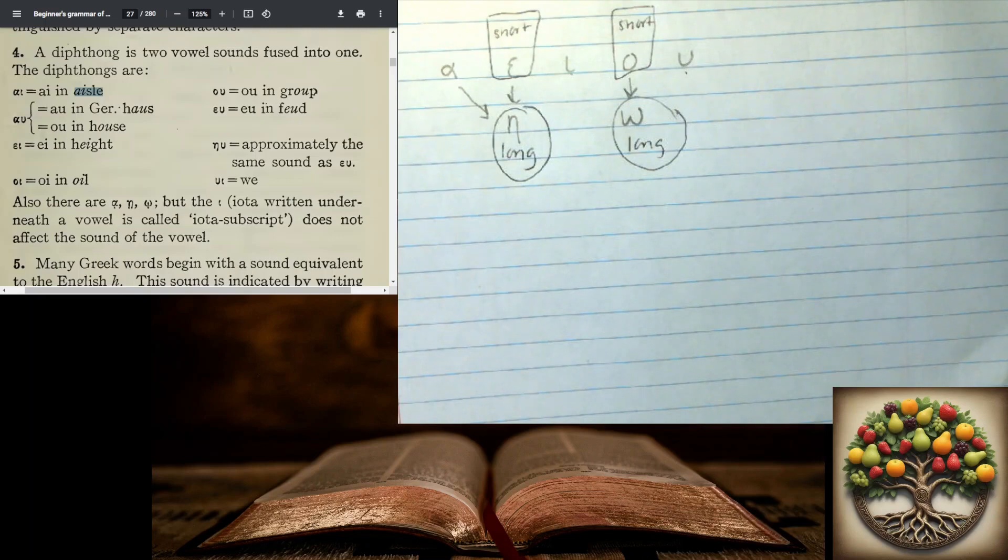We've got isle. Kind of like au, house. Here's the German various variations on that. EI, epsilon, iota, height.